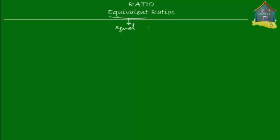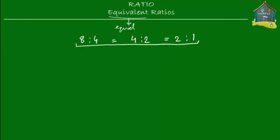Here's an example of equivalent ratios: 8 to 4 is equivalent to 4 to 2, and it's also equivalent to 2 to 1. So 8 to 4, 4 to 2, and 2 to 1 are all equivalent to each other.